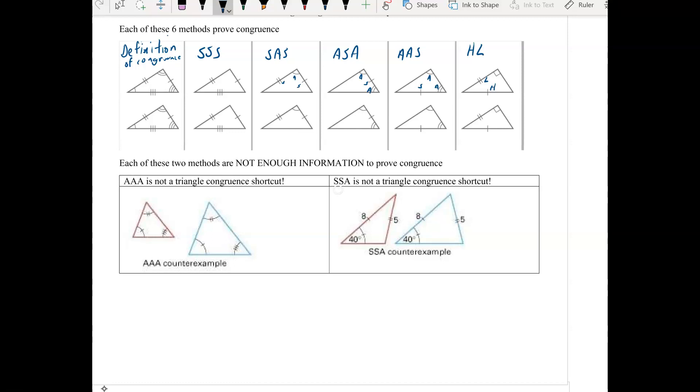And the same is true of side-side angle, having two sides and the non-included angle, which is different from having two sides and the included angle, it's the non-included angle, doesn't necessarily make the same triangle, and you can see it right here, because these two triangles have the same angle. It's not a good shortcut.